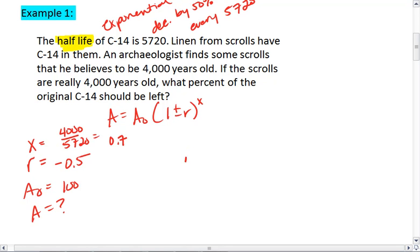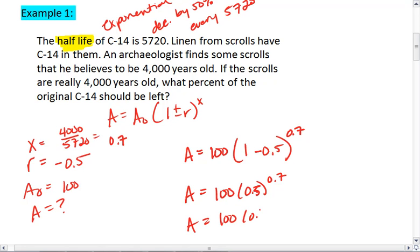Now we can plug everything in. We get A equals 100 times 1 minus 0.5 to the 0.7. We get A equals 100 times 0.5 to the 0.7. Remember your order of operations. A equals raise 0.5 to 0.7 first. We get 100 times 0.616. And A equals 61.56%.